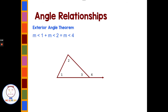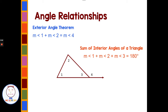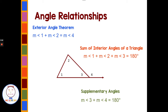We have some relationships when we have this line extended past the triangle. The exterior angle theorem says angle one plus angle two equals angle four. Also, angle one plus angle two plus angle three add up to 180, because the three interior angles of a triangle always have a sum of 180. Additionally, angle three plus angle four together make a straight line, so they add up to 180 degrees — that's called supplementary angles.